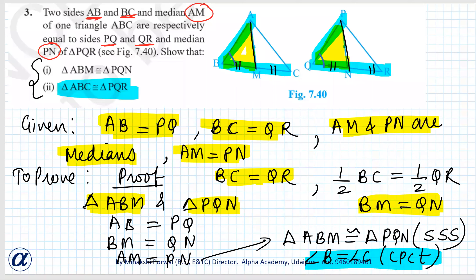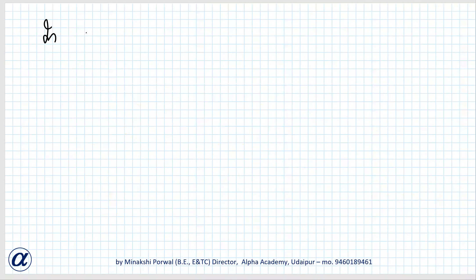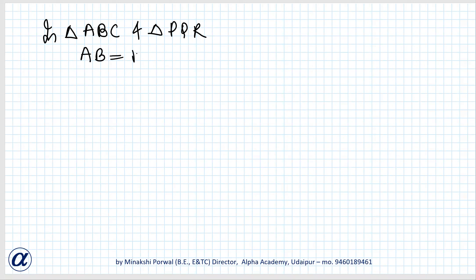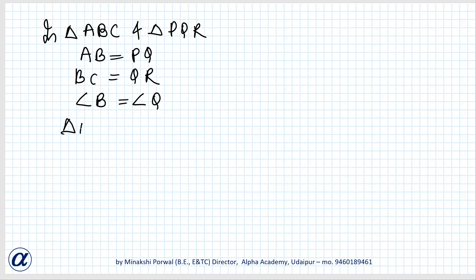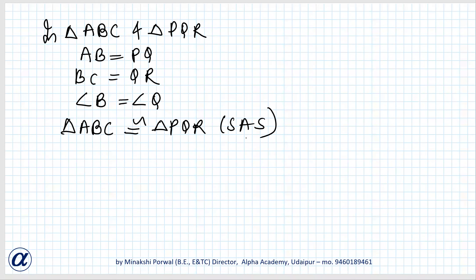Next, in triangle ABC and triangle PQR: AB equals PQ, BC equals QR, and angle B equals angle Q. So triangle ABC is congruent to triangle PQR by SAS congruence rule.